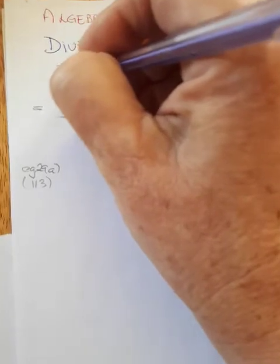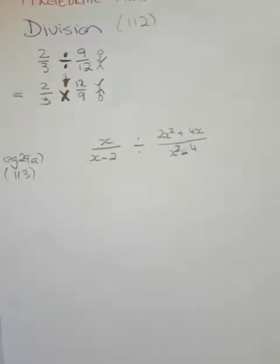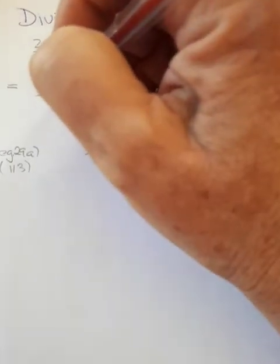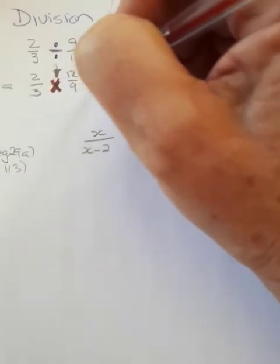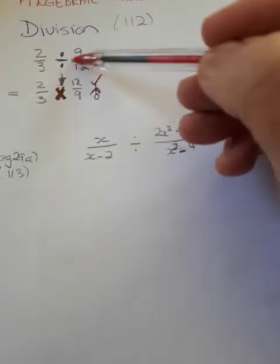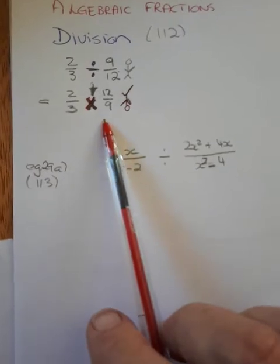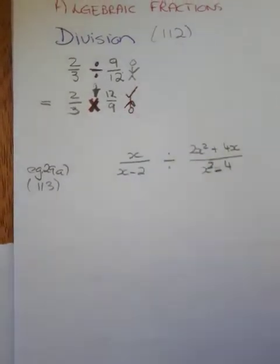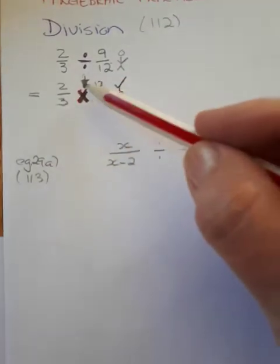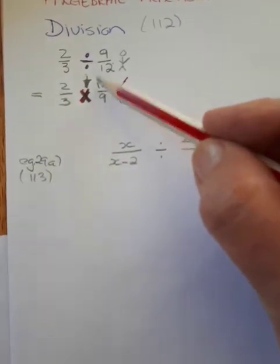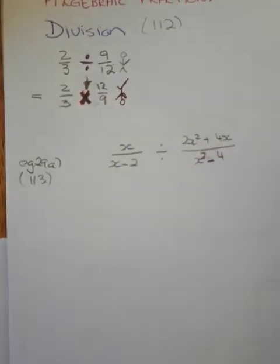To repeat: when we divide fractions, we change the division to a multiplication and we use the reciprocal of the fraction after the division sign. We are then at normal multiplication of fractions, where because it's multiplication we can cancel using the highest common factor, and thereafter multiply numerator by numerator and denominator by denominator.